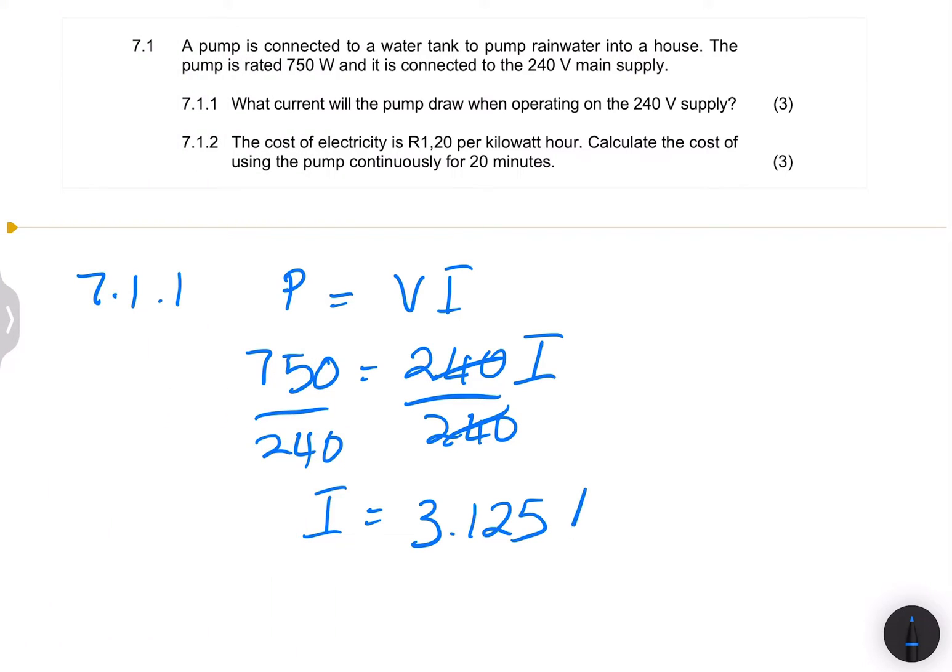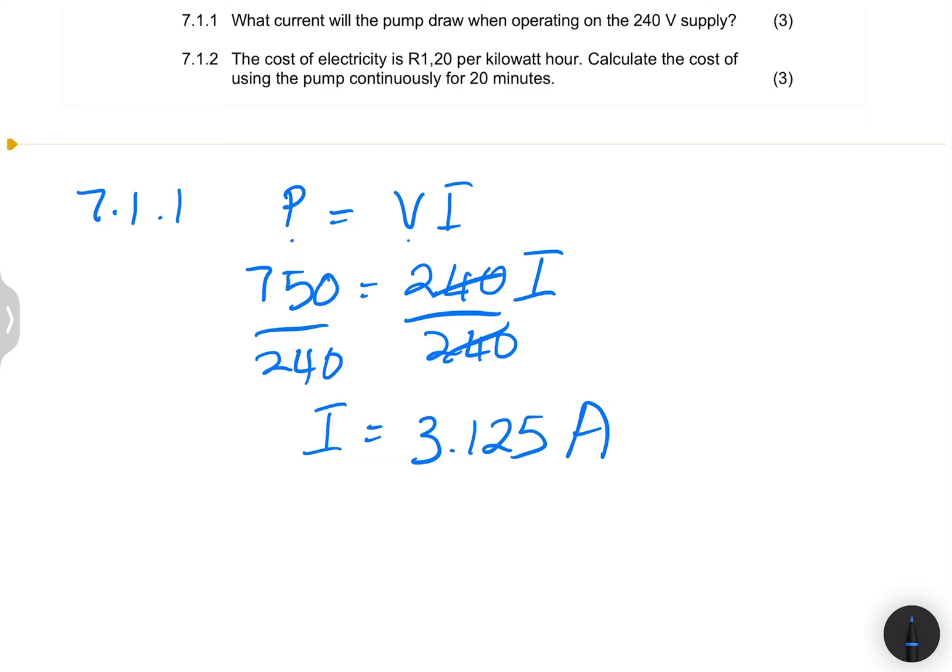Of course, if we are strictly required to use two decimals, in this case, that would be 3.13. So that's our current. So remember, when it comes to power, there are those three equations, formulae rather, that we have. But in this case, this one was the most relevant one because we both have the power and the voltage and we wanted the current.